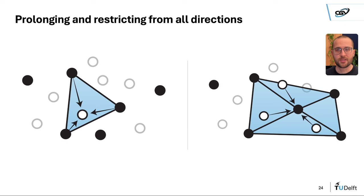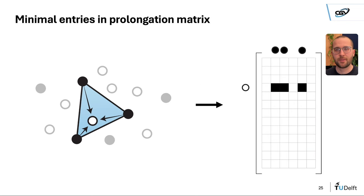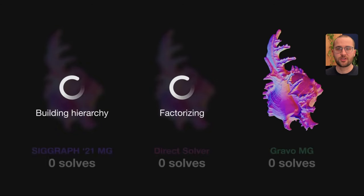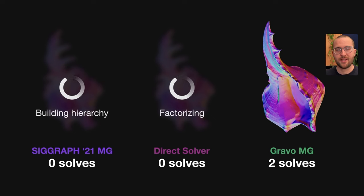Using these triangles ensures that a point always receives information from multiple directions during prolongation and restriction. And it minimizes the number of entries in the prolongation matrix, which enables quick-solving iterations. Our technique is multiple orders of magnitude faster in construction than prior work while retaining the solving speed.